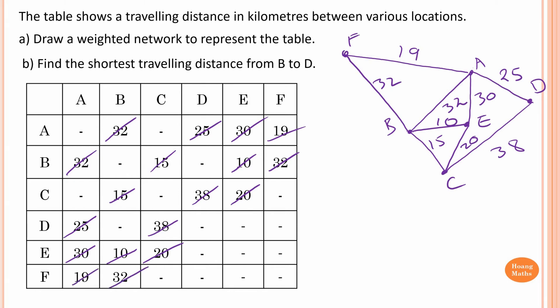Part B: find the shortest traveling distance from B to D. By inspection, the shortest distance is from B to C and then from C to D. So the shortest distance is B to C to D, which is 15 plus 38. 15 plus 30 is 40, and 5 plus 8 is 13, so therefore 53 kilometers.